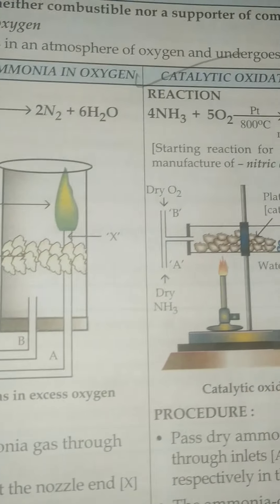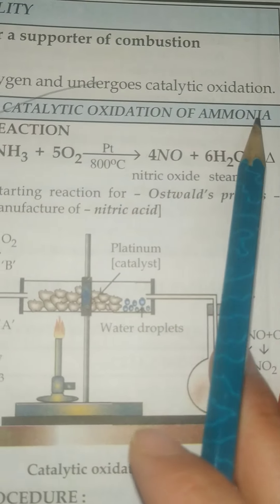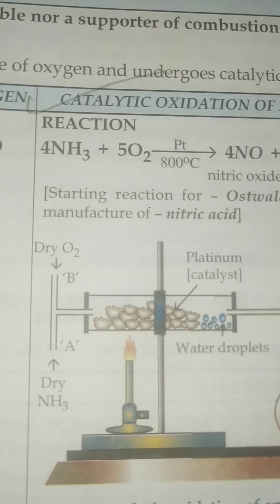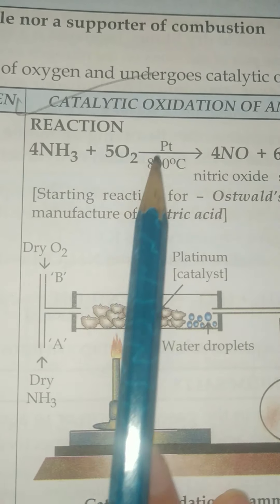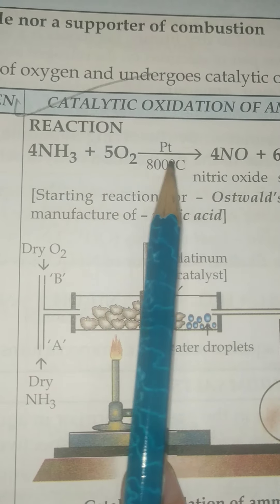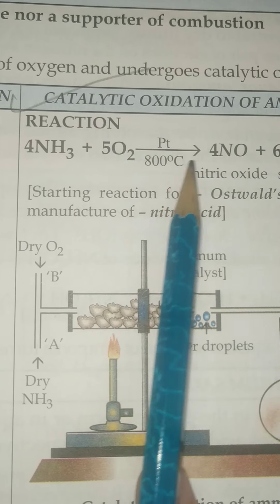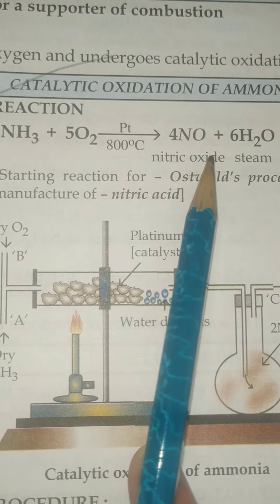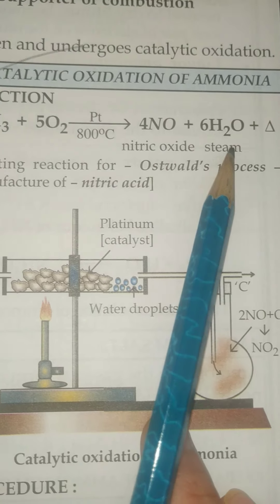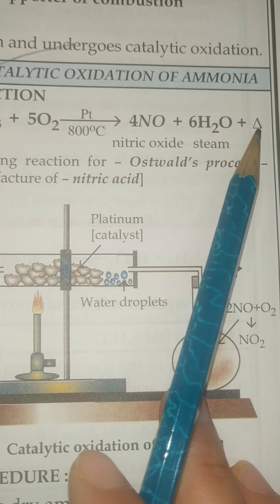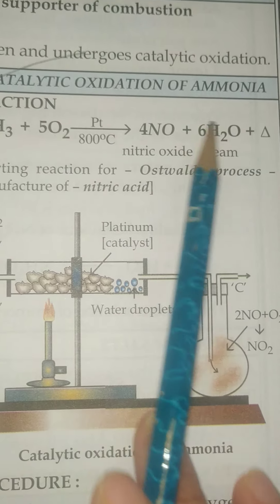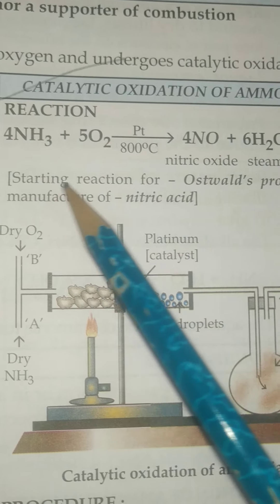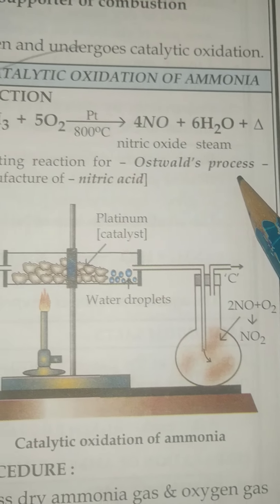Next is the catalytic oxidation of ammonia. When ammonia and steam react with oxygen in the presence of platinum at a temperature of 800 degrees Celsius, it will give nitric oxide, steam, and heat. This means it is an exothermic reaction.